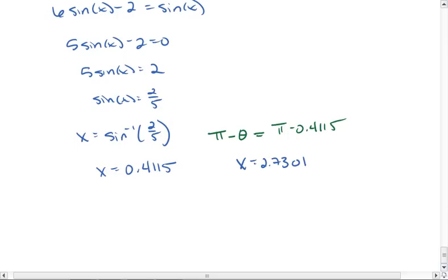So we can get as many 2 pi's as we want to. For 0.4115, if I were to subtract 2 pi, I would get negative 5.8717. And if I add 2 pi, I get 6.6947.